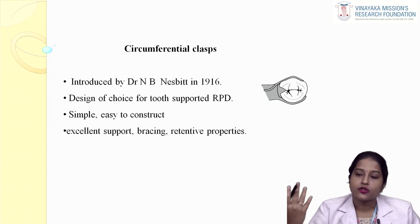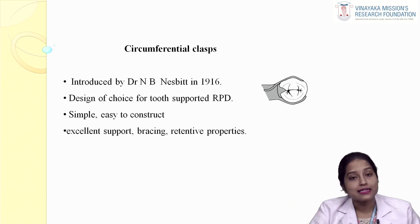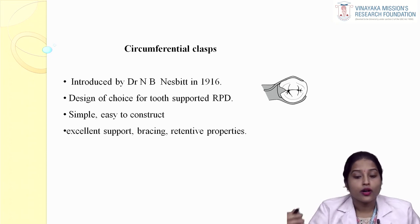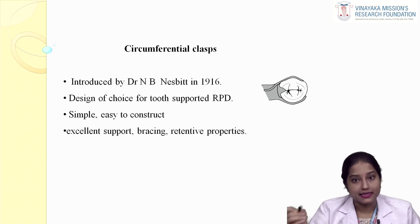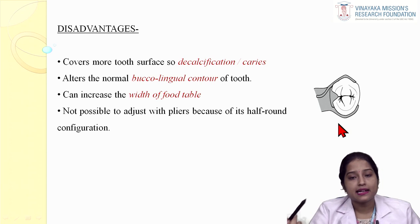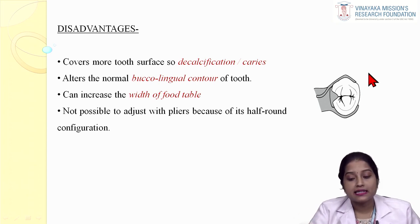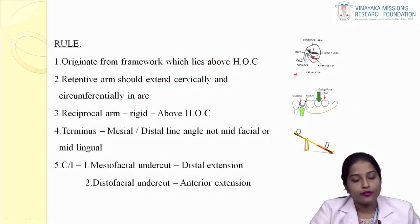There are two types of clasp: circumferential clasp and bar clasp. The circumferential clasp was introduced by Dr. N.B. Nesbitt in 1916. It is the design of choice for a tooth-supported RPD; it is simple and easy to construct with excellent support, bracing, and retentive properties. Disadvantages include covering more tooth structure resulting in decalcification or caries, altering normal buccolingual contours, increasing the width of the occlusal table, and difficulty in adjustment with pliers because it is made with a cast alloy.